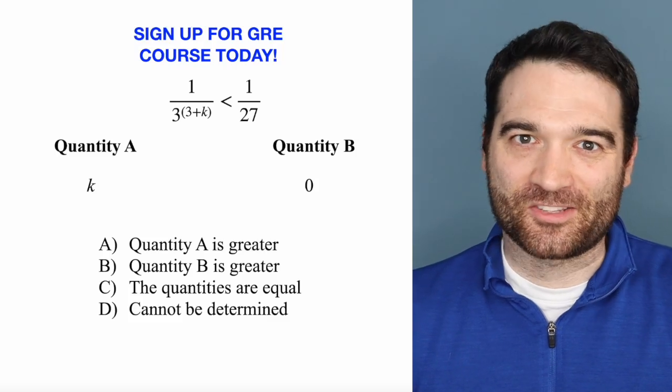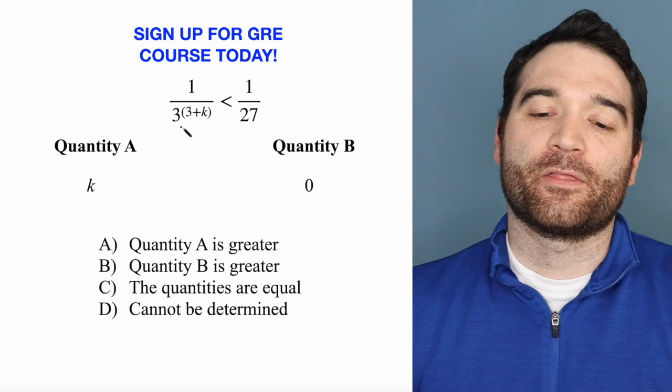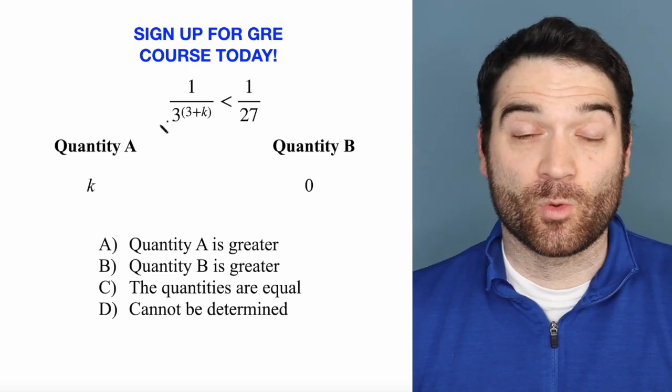Here's a GRE algebra question. Let's take a look. We're told that 1 over 3 to the power of 3 plus k is less than 1 over 27. So we want to know what's greater.